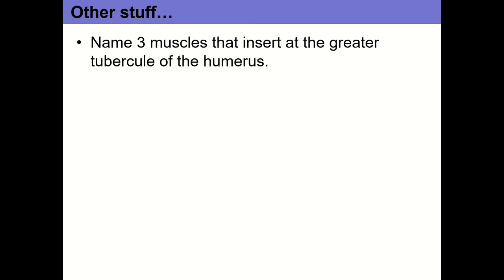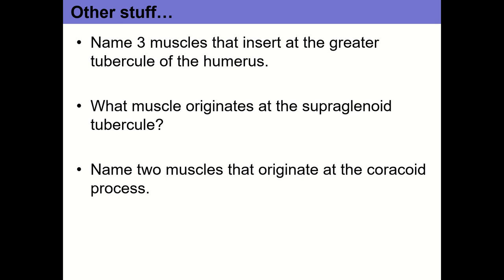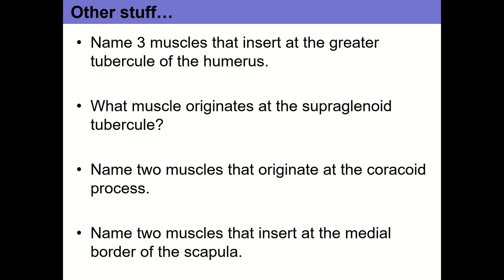Three muscles that insert on the greater tubercle of the humerus: supraspinatus, infraspinatus, and teres minor — three of the four rotator cuff muscles. The muscle that originates from the supraglenoid tubercle is the long head of biceps brachii. Two muscles that originate from the coracoid process: coracobrachialis and the short head of biceps brachii. Two muscles that insert on the medial border of the scapula: rhomboid major and rhomboid minor.